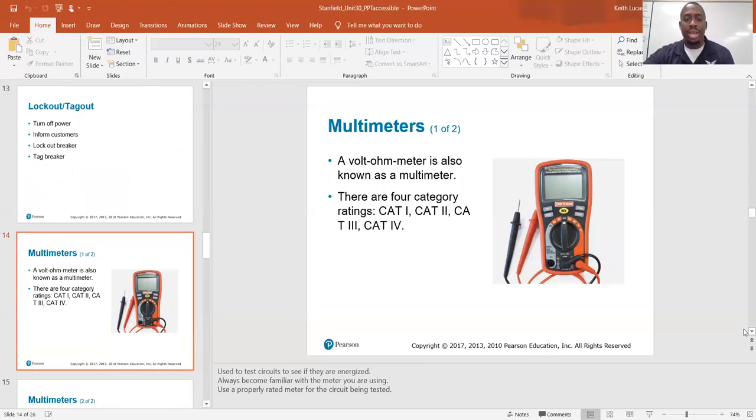Multimeters. This is your third hand. A voltmeter is also known as a multimeter. There are four category ratings: CAT-1, CAT-2, CAT-3, CAT-4. Use to test circuits to see if they are energized. Always become familiar with the meter that you're using. Use a properly rated meter for the circuit being tested.